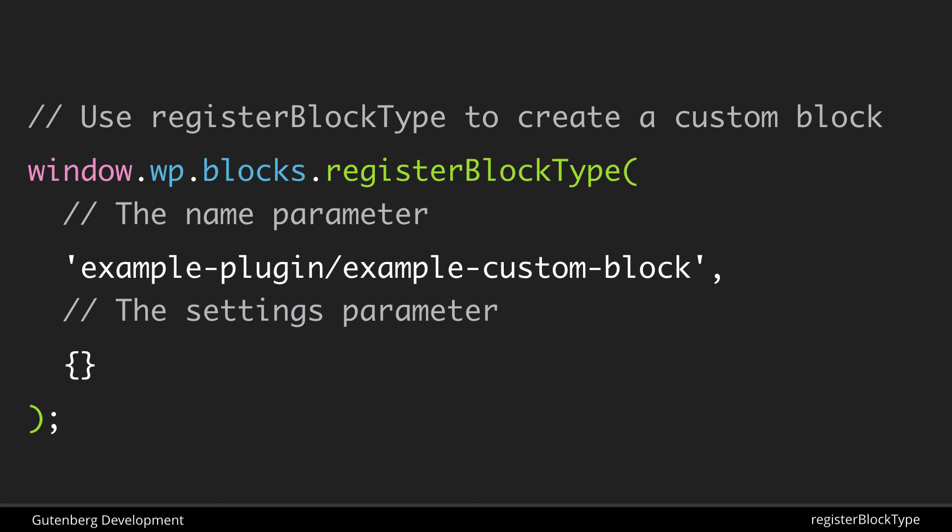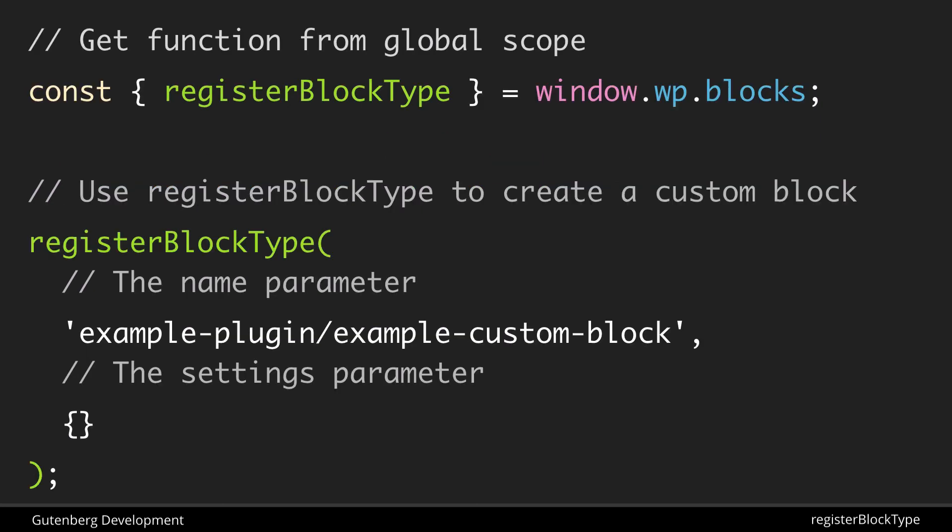In your code you'll likely include a line at the top like: const { registerBlockType } = window.wp.blocks. This destructures the blocks object and pulls out registerBlockType on its own so you can just write registerBlockType directly in your code. Since blocks isn't a separate npm package — it's just globally available — you're simply shortening the name for convenience.